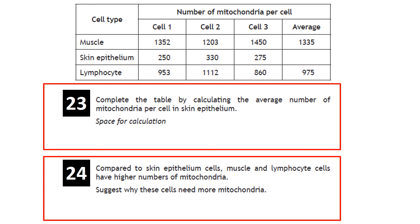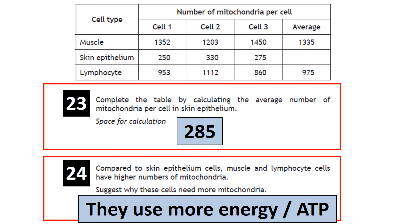Questions 23 and 24: question 23 is an average of three numbers, giving 285. Question 24 asks why skin epithelium, muscle, and lymphocyte cells have higher numbers of mitochondria than other cells — mitochondria produce energy (ATP), so the answer is that these cells use more energy or require more ATP.